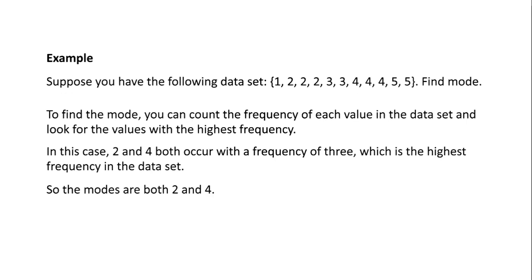Example: Suppose you have the following data set: 1, 2, 2, 2, 3, 3, 4, 4, 4, 5, 5. Find mode. To find the mode, you can count the frequency of each value in the data set and look for the values with the highest frequency. In this case, 2 and 4 both occur with a frequency of 3, which is the highest frequency in the data set. So the modes are both 2 and 4.